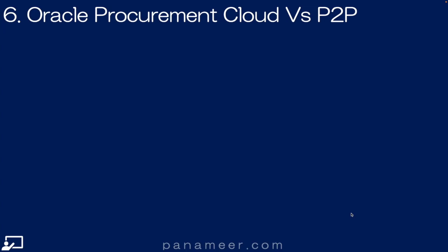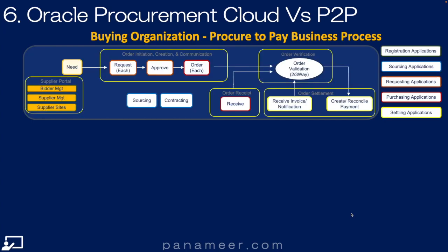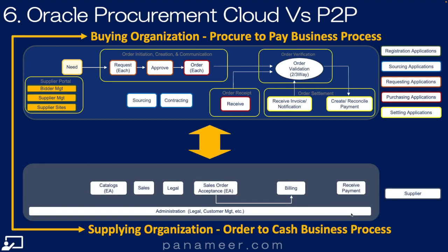And lastly, Slide 6: Oracle's Procurement Cloud offering versus the industry's P2P Procure-to-Pay process. Here we see the buying organization's procurement process, and here we see the reciprocal supplier order-to-cash process. However, the big takeaway is that the P2P process includes settlement and payables activities and transactions, whereas Oracle's procurement functional area and Procurement Cloud offering does not. Please note that within Oracle, payables transactions are part of the payables functional area. Click the link above to watch a quick video explaining the payables functional area.